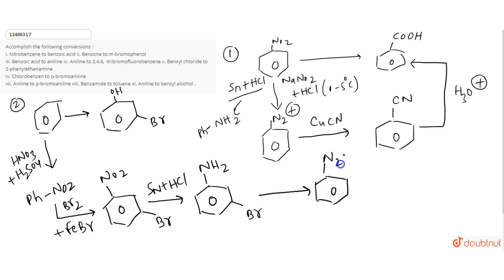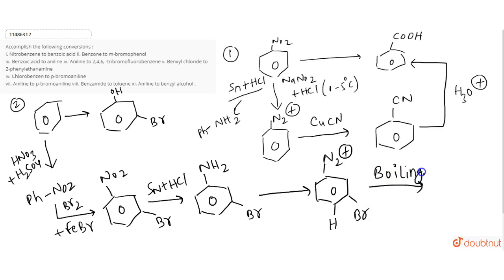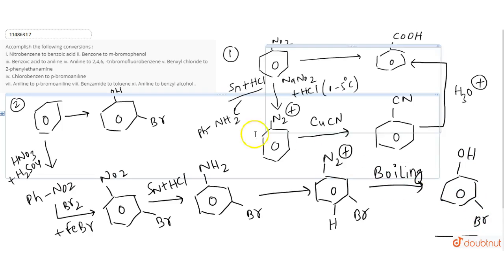Now we convert the NH2 group into N2 plus through diazotization, and then by boiling it will be converted into OH, giving us the meta-bromo phenol. This is the final product we needed to prepare.